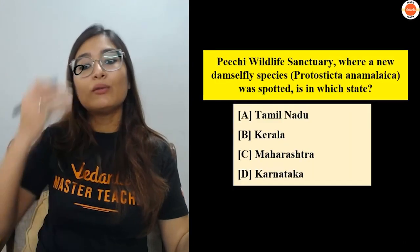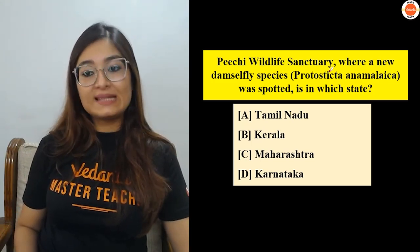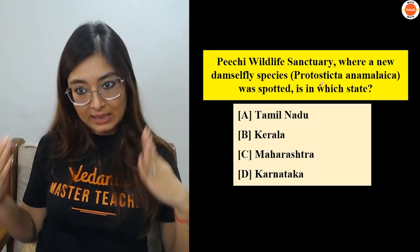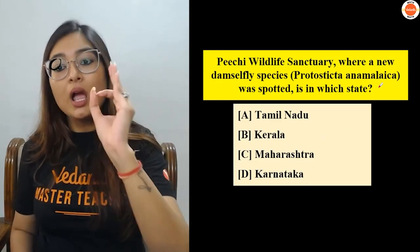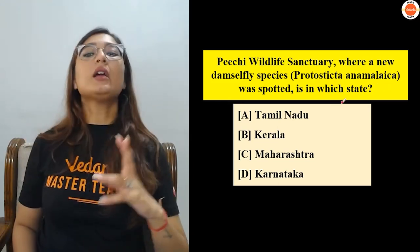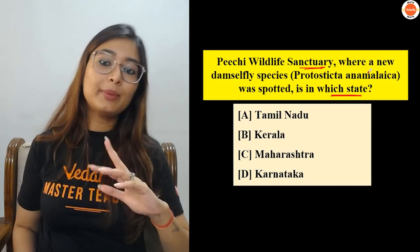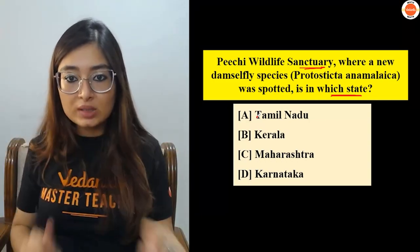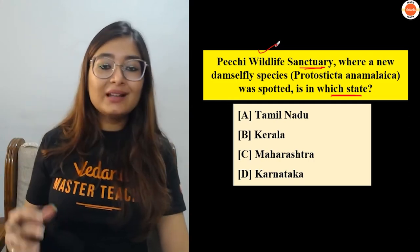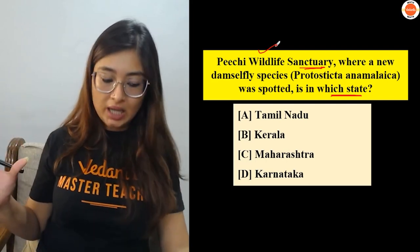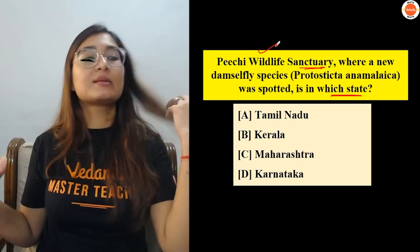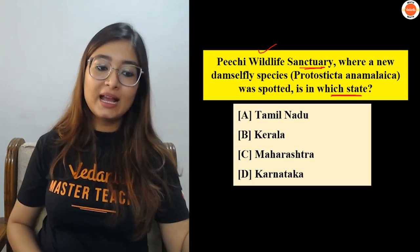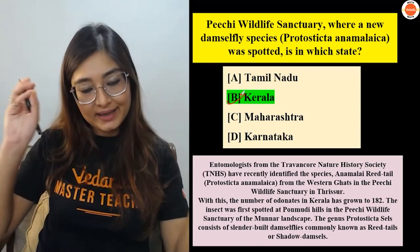Next question: In which PG Wildlife Sanctuary was a new damselfly species — Protostica animalica — discovered? Which state is this sanctuary in? We need to focus on which state this sanctuary is in: Tamil Nadu, Kerala, Maharashtra, or Karnataka.